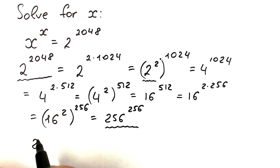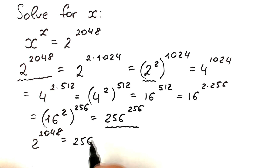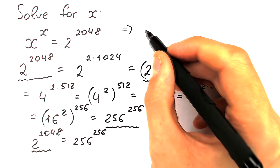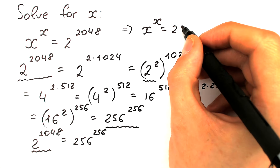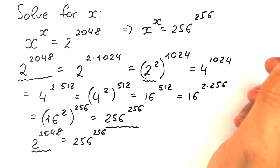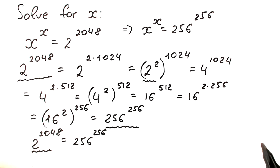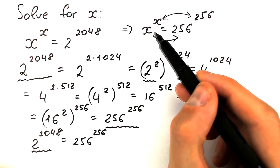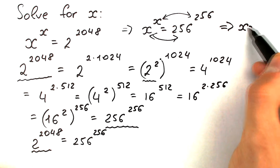So 2 to the power 2048 equals 256 to the power 256. Let's substitute this back into our equation: x to the power x equals 256 to the power 256. The left-hand side has same base and same exponent, and the right-hand side also has same base and same exponent. The only solution is when base equals base and exponent equals exponent, so x equals 256.